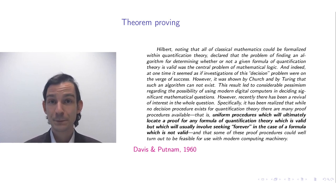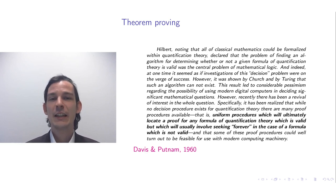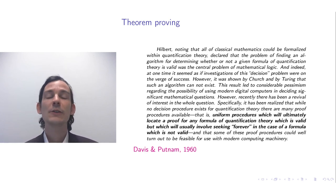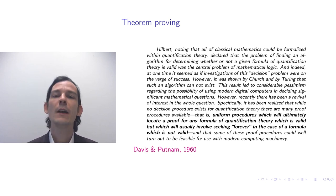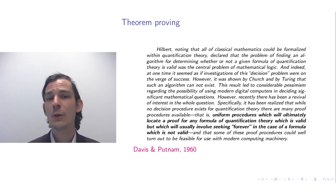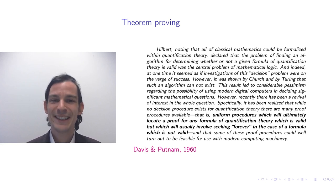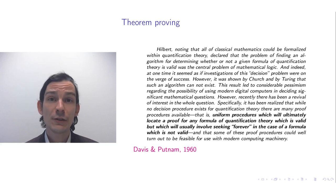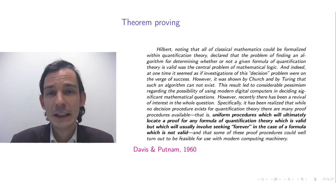This wall of text is from a paper by Davis and Putnam from 1960, in which they write that Hilbert — the same Hilbert I talked about in the last video — noting that all of classical mathematics could be formalized within quantification theory, first-order logic, declared that the problem of finding an algorithm for determining whether a given formula is valid was the central problem of mathematical logic. He declared you want to be able to decide whether a formula is valid or not. Over time, it turns out that Church and Turing showed that such a decision procedure cannot exist.